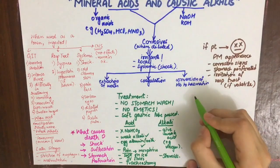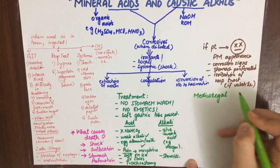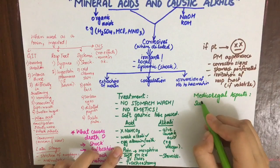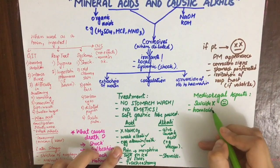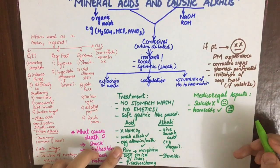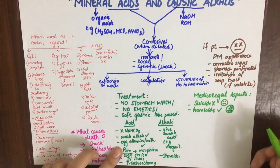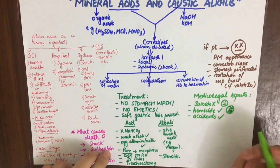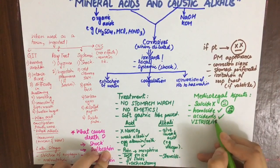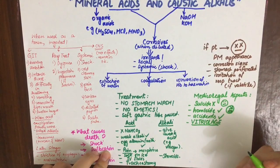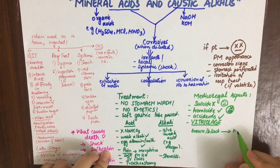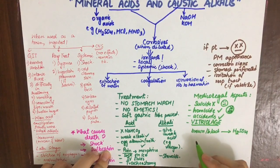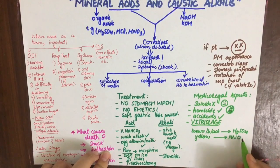The medico-legal aspects of corrosives are that they are not typically used for suicide because the process is very painful, though they can be used for homicide. Accidental poisoning also occurs. An important medico-legal aspect is vitriolage — the throwing of any corrosive on a person with malicious intent, out of jealousy, hatred, or vengeance. Sulfuric acid, nitric acid, and carbolic acid are commonly used.